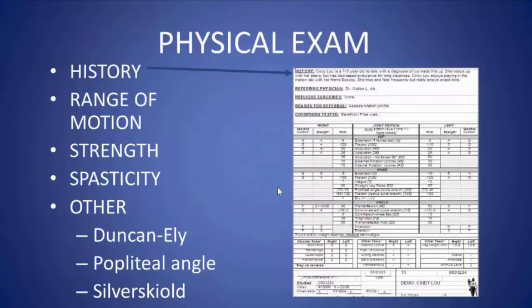After this introductory examination, we do a more thorough physical examination. This is the sheet our gait lab personnel use to record findings, and it's exceedingly useful. You may not want anything this detailed, but you should have a matrix for the major findings of your lower extremity exam, so that you can go back to see how a patient has done following an intervention, or whether they've remained the same, deteriorated, or improved over time.